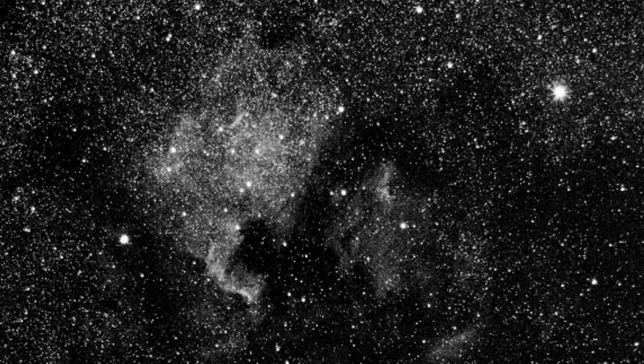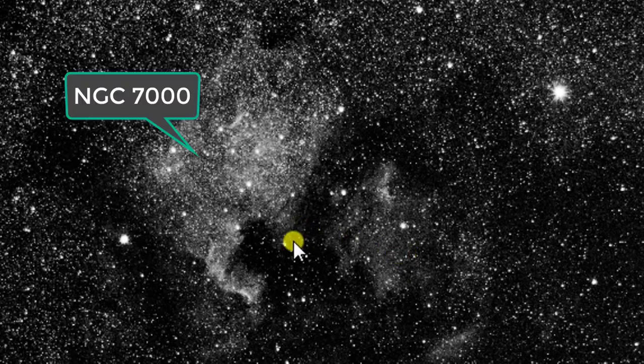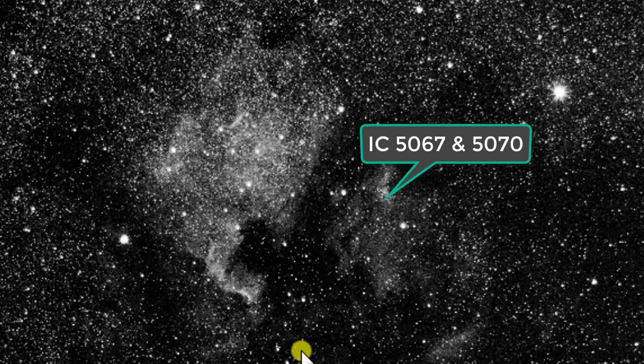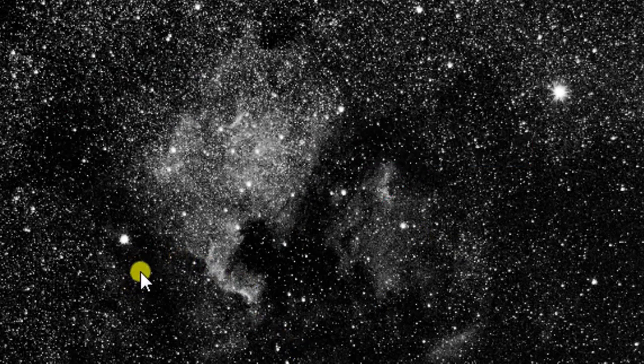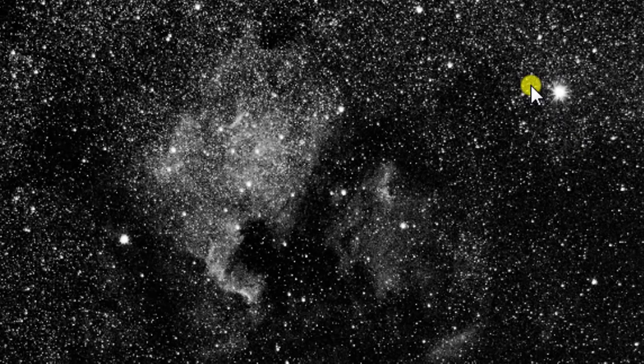I'm just going to show you some examples of what the 1.3 megapixel Starshoot Autoguider is capable of. This is an image I took of the North America Nebula and the Pelican Nebula. I believe these were two minute exposures. You can see that the guiding is actually pretty good. This is Deneb over here in this corner. Zooming in here, the guiding stays pretty consistent throughout. The stars aren't really stretched or anything like that.